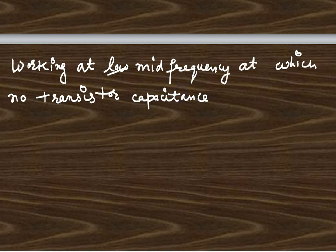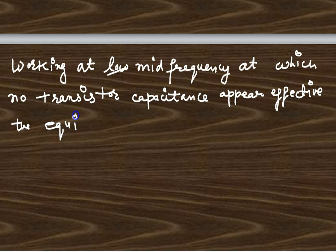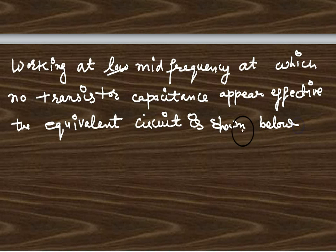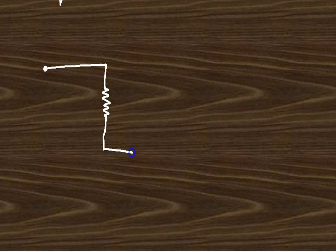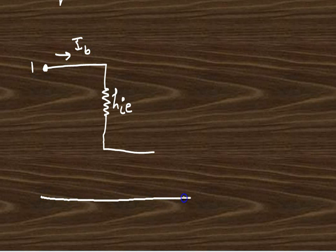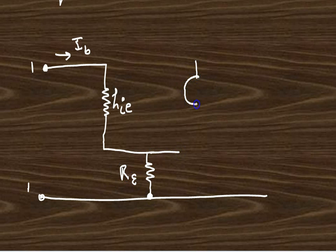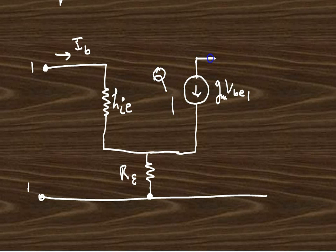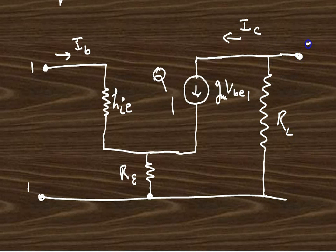Because we are working at the mid-frequency, there is no transistor capacitance present. The equivalent circuit is now drawn for transistor Q1: HIE is the input impedance, IB is the base current flowing into port 1-1. RE is the emitter resistor, and there is a current source — a current generator — GMVBE1 for the Q1 transistor. IC flows into RL at port 2-2.